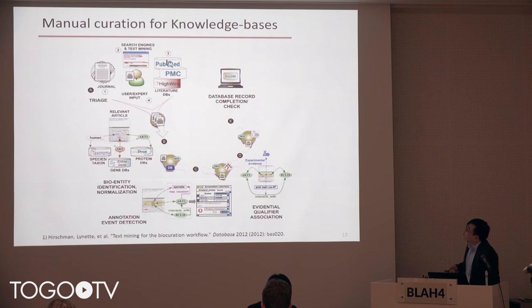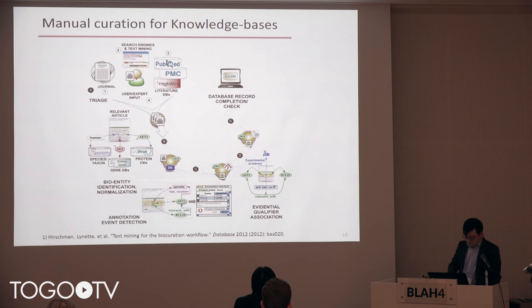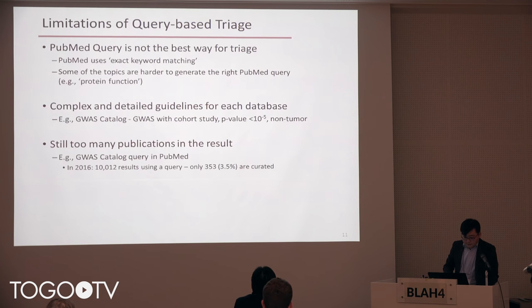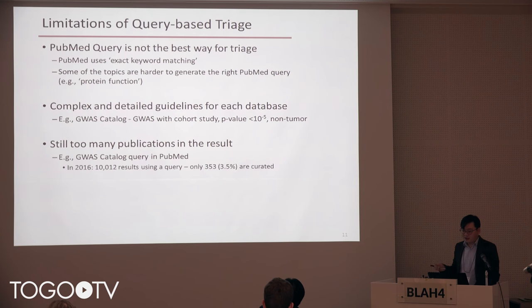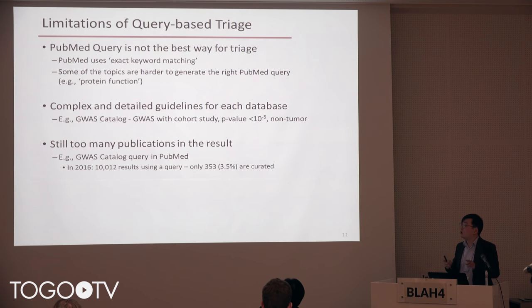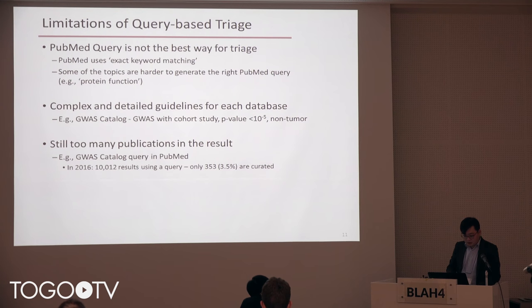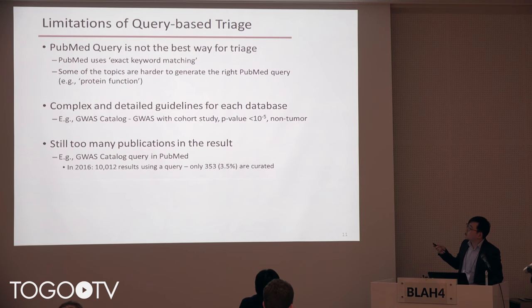This is the bio curation workflow, and in this project we are focusing on the triage process. A lot of manual curation databases use PubMed queries for triage, but we don't think PubMed query is the best way. Because PubMed uses exact keyword matching — the keyword typed must be exactly contained in the text — and sometimes it's not. For example, if the project is focusing on protein function, the text often doesn't contain that exact phrase.